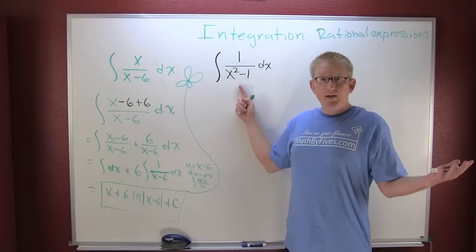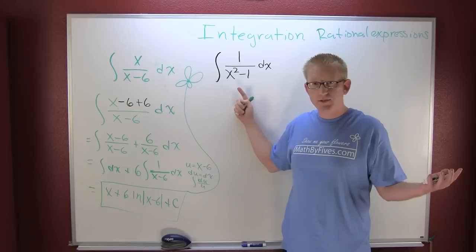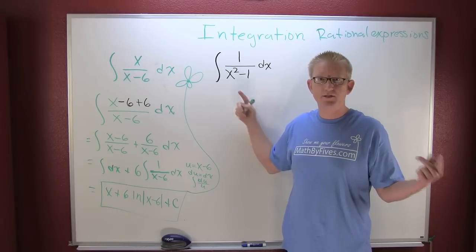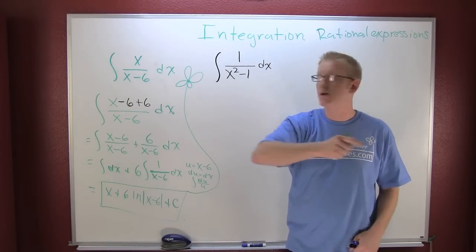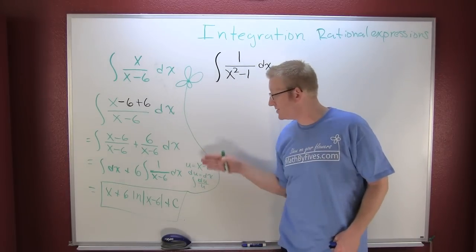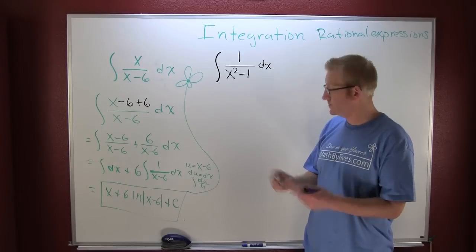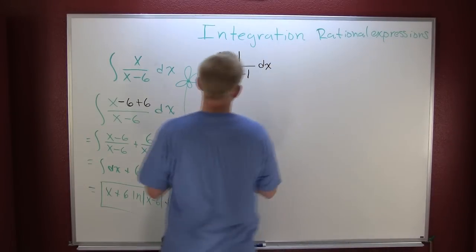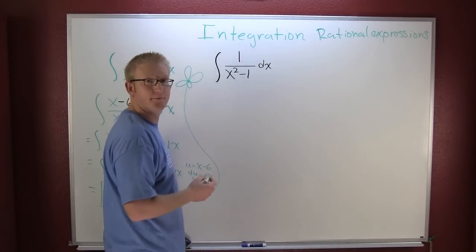My denominator has a bigger degree than my numerator, so I'm going to attempt to perform some partial fractions. The reason I want to do this is so that I could separate it up into factors where I have linear denominators. And if I do that, then I have a situation where I can go log in.